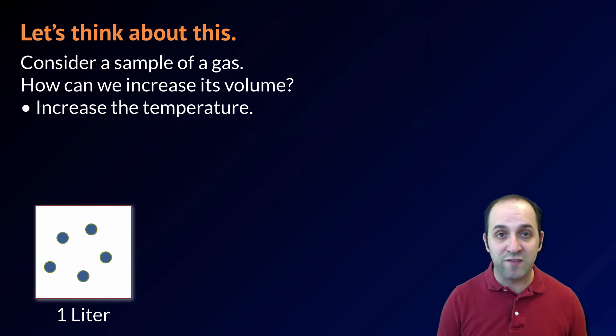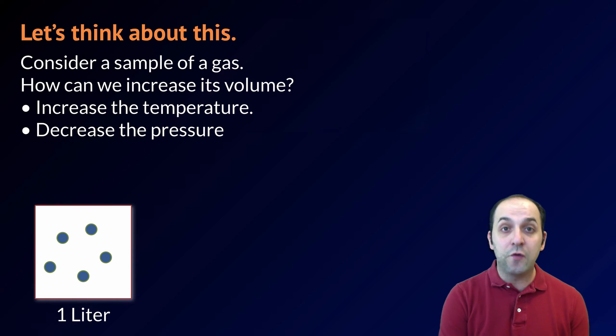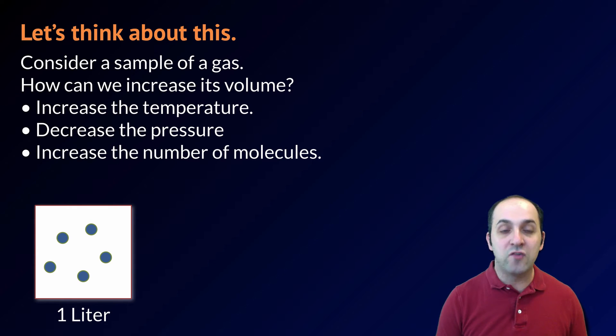The first is that we could increase the temperature. Increasing the temperature gives the particles more kinetic energy and causes the volume of the sample to increase. We could also decrease the pressure. That's going to decrease the force that's keeping those particles together and allow their overall volume to expand. And the last thing that we can do is just increase the number of molecules of the gas that we have.